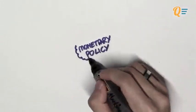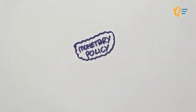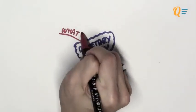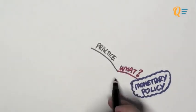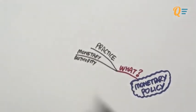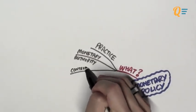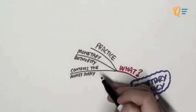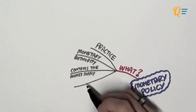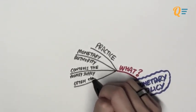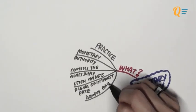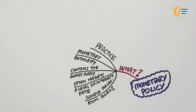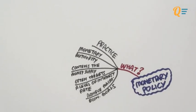In today's video, we're going to be talking about monetary policy. Monetary policy is a practice where a monetary authority controls the money supply, often to target a certain level of interest rates so that they can achieve certain macroeconomic goals.